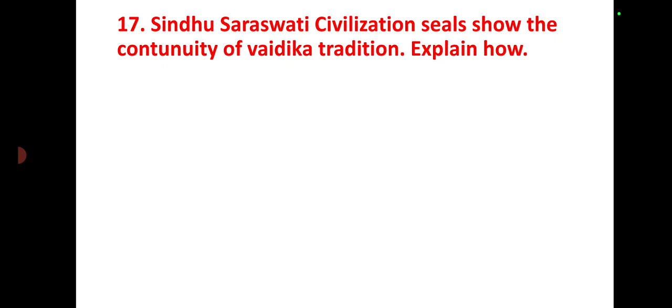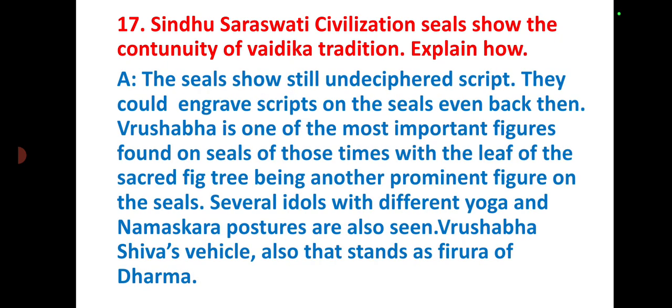Question number seventeen: how do Sindhu-Saraswati civilization seals show the continuity of the Vedic tradition? The seals show an undeciphered script — scripts were engraved on seals even back then. Rushaba is one of the most important figures found on the seals. The leaf of the sacred fig tree is another figure. Seated idols in yoga and namaskara postures are also seen. Rushaba — Shiva's vehicle — stands as a figure of dharma.